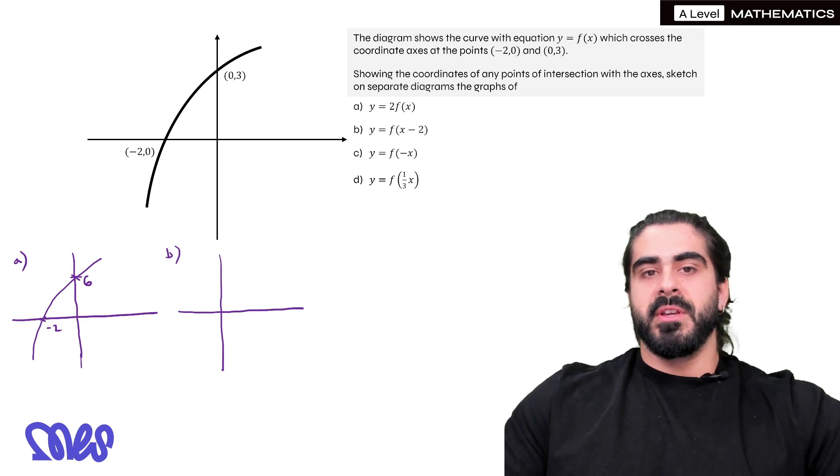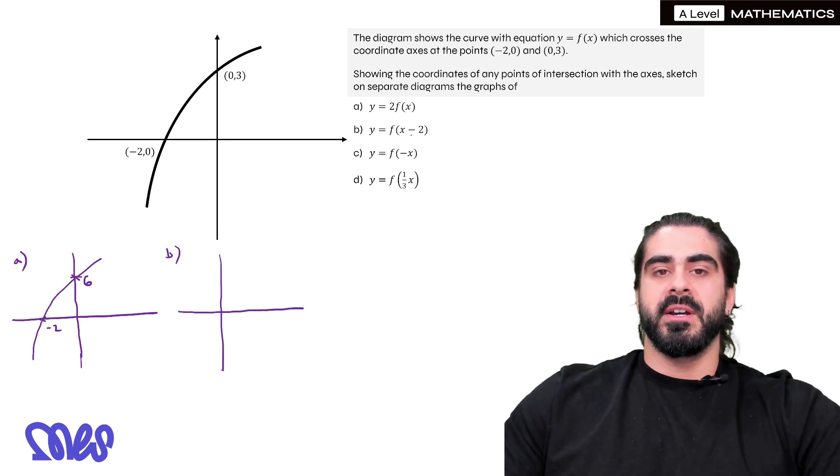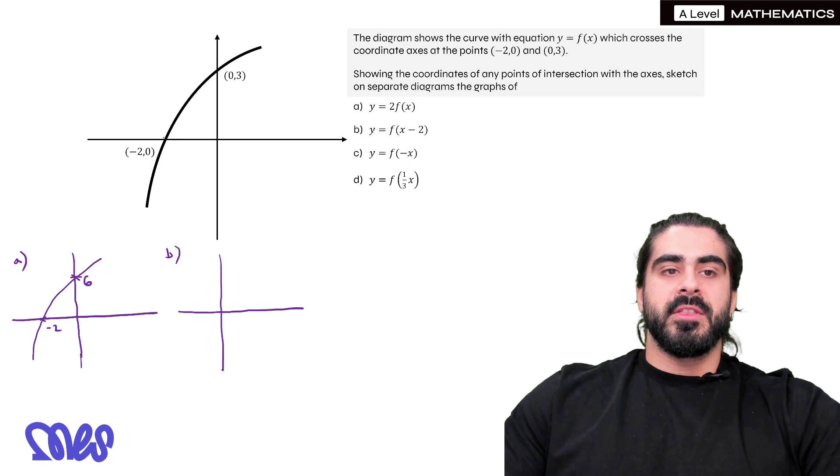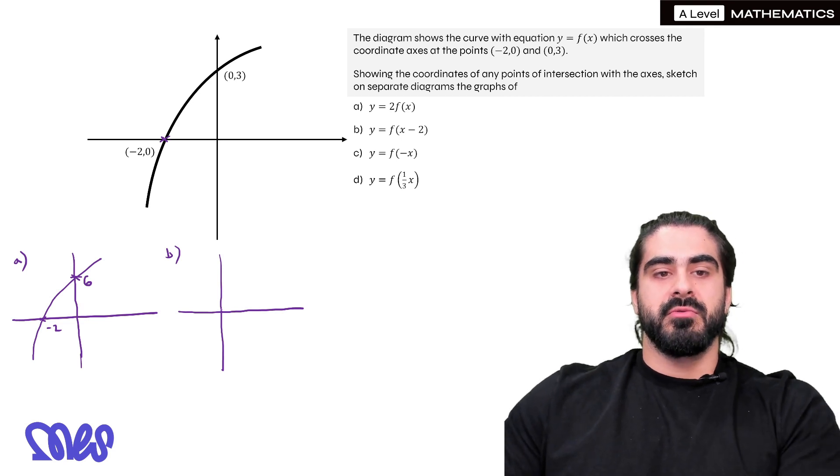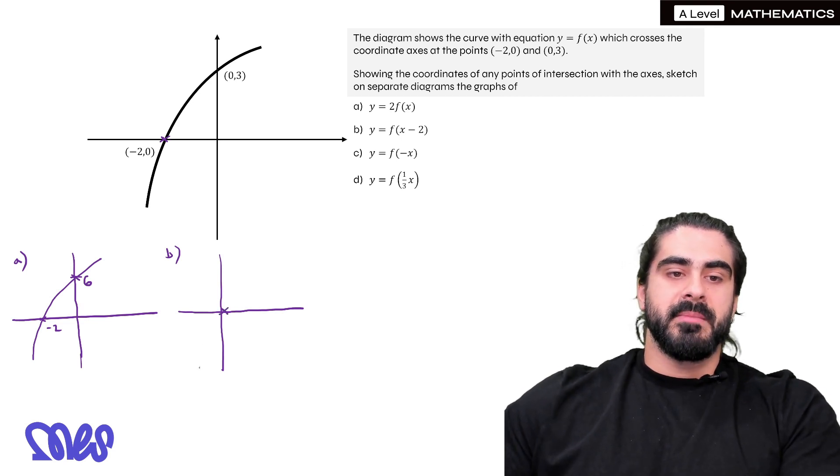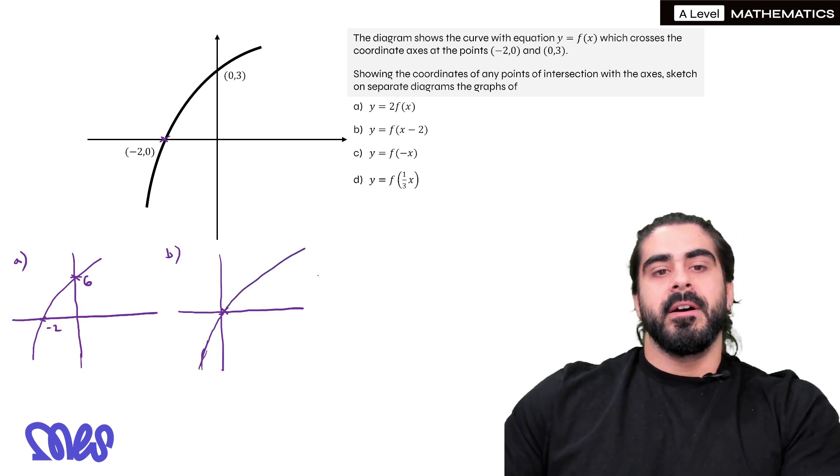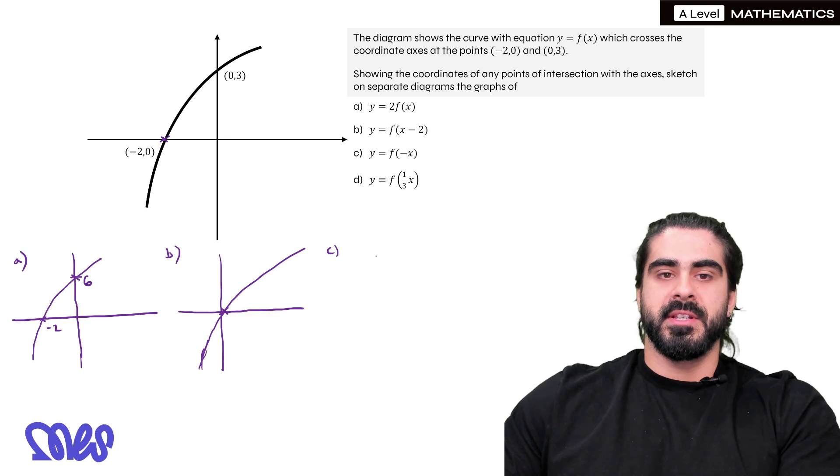Part b. This is an interesting one because we're shifting the graph to the right by 2. Now the only thing that gets affected directly is this x intersection at (-2,0). If we move it to the right by 2, it goes through (0,0). So it means it has the same shape but it only crosses the axis once at (0,0).